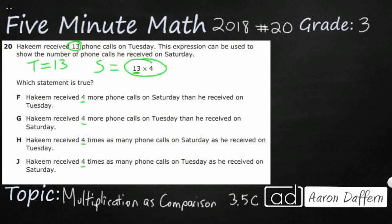So let's see if we can figure out what each of these selections are. We're going to look at each of these answers, see if we can draw a picture to represent them. Hakeem received four more calls on Saturday than he received on Tuesday. So what that would mean is that Saturday would equal, and we've got this four more calls than Tuesday. So they're comparing Tuesday and Saturday. And so Tuesday is 13, and four more.